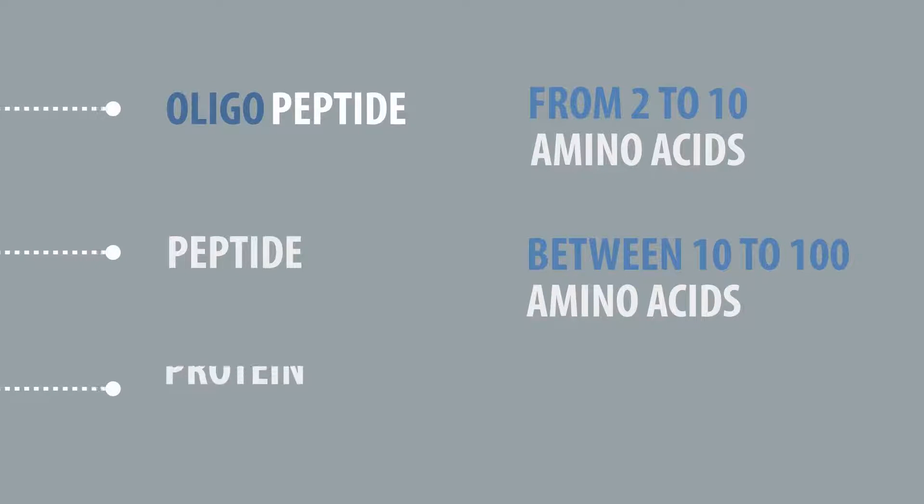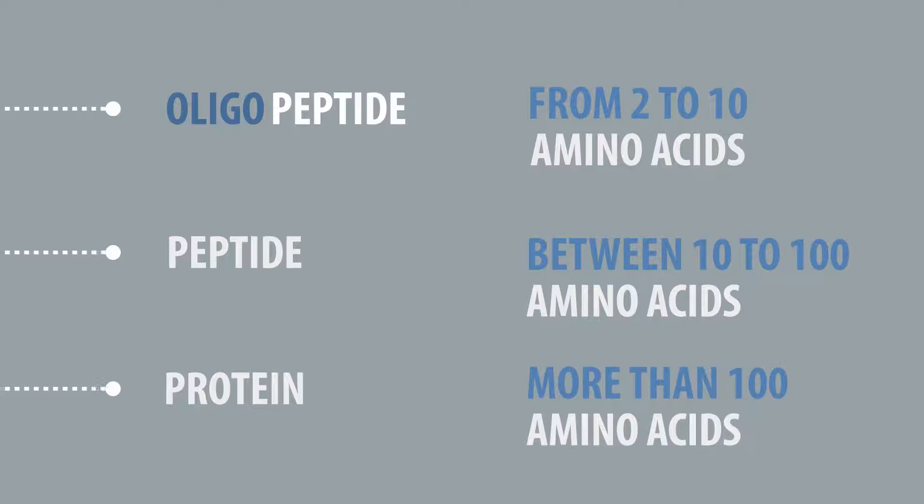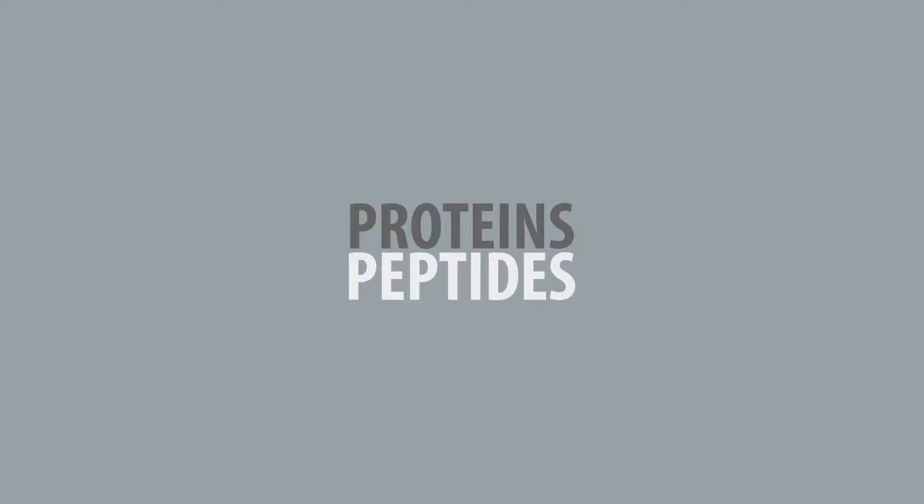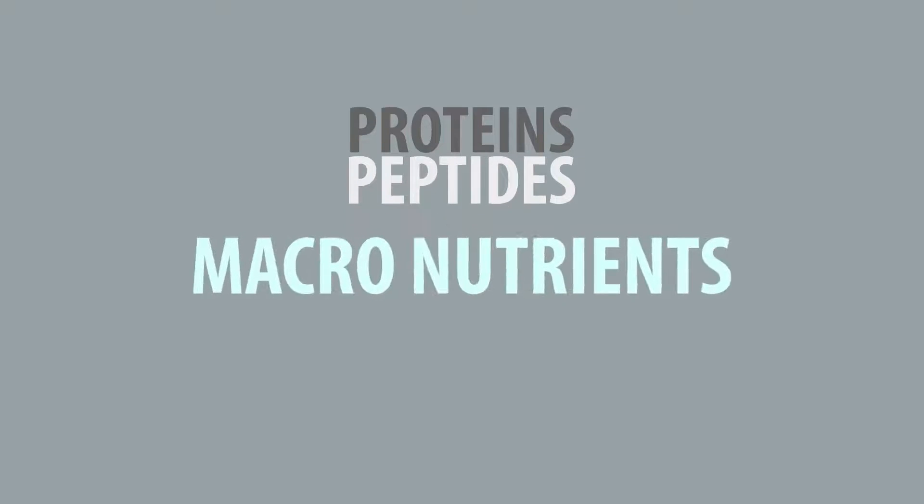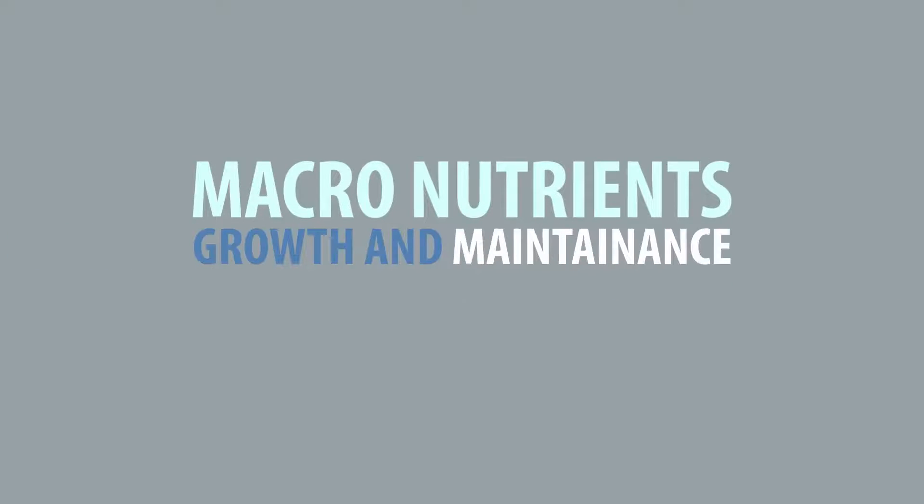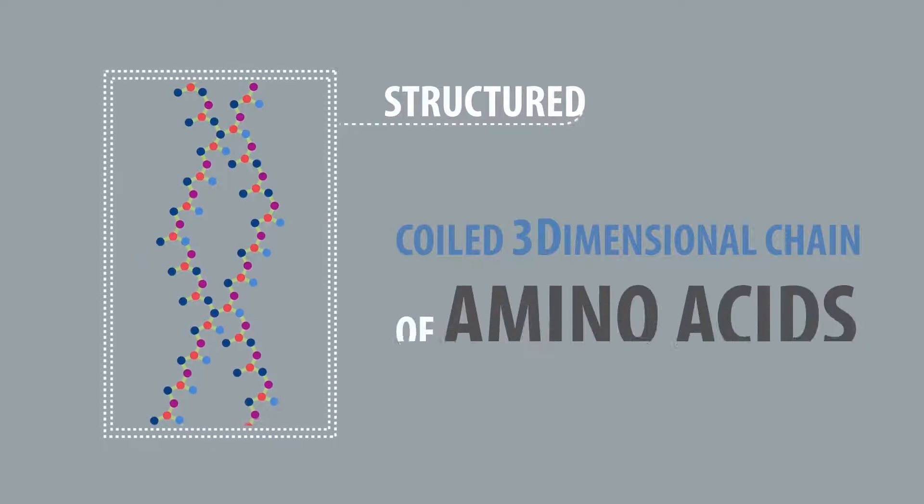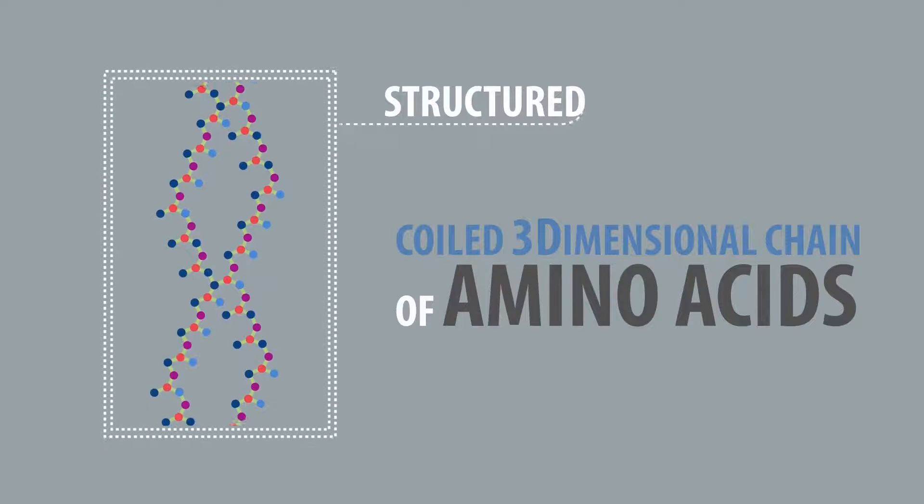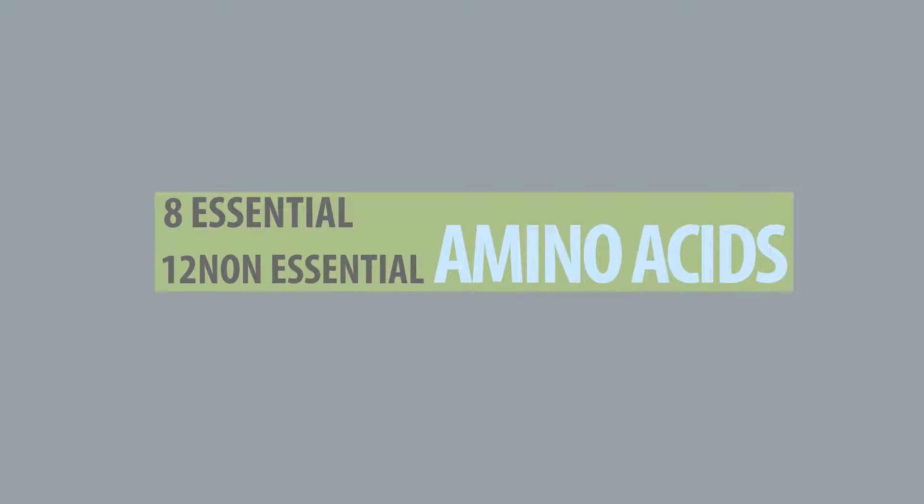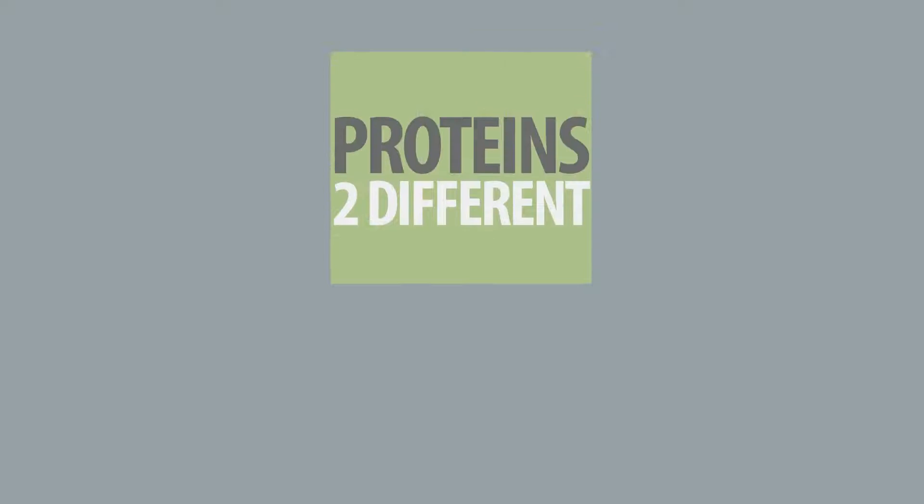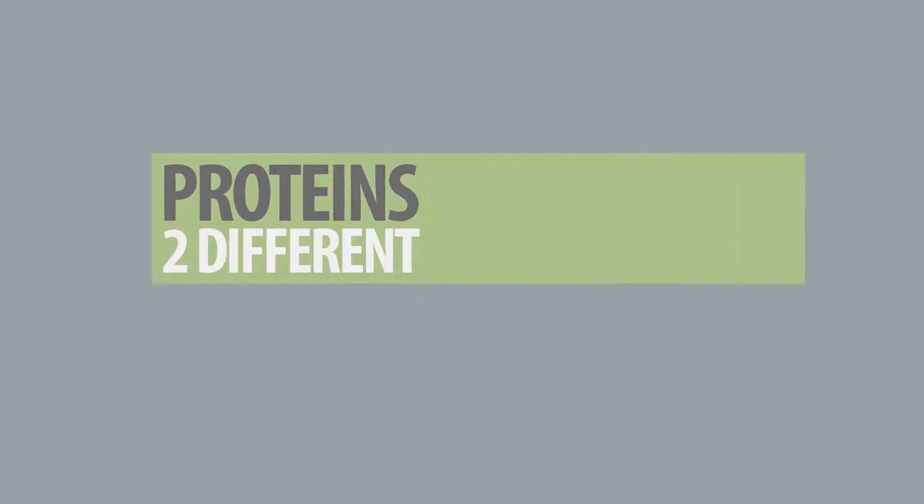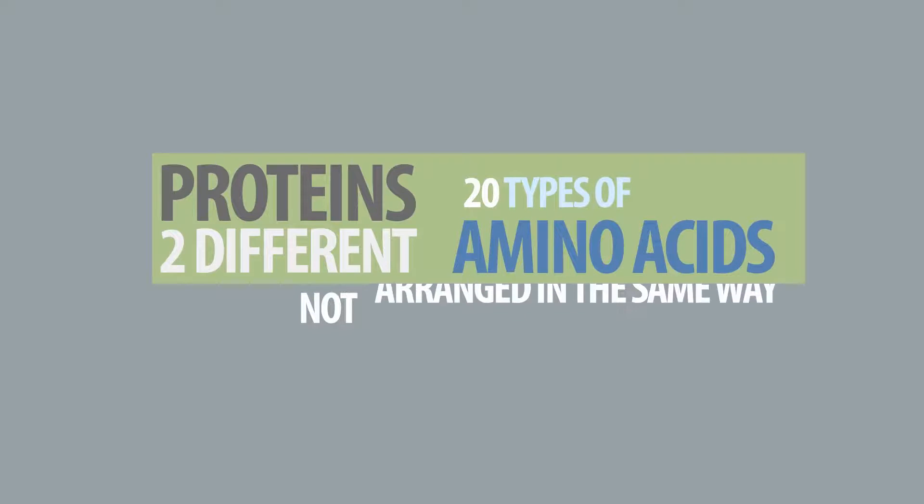Proteins and peptides are macronutrients that support the growth and maintenance of body tissues. They are structured in a coiled three-dimensional chain of amino acids which are arranged in a precise sequence. There are 8 essential amino acids and 12 non-essential amino acids. If we have two different proteins that contain all 20 types of amino acids, it does not mean they are arranged in the same way.